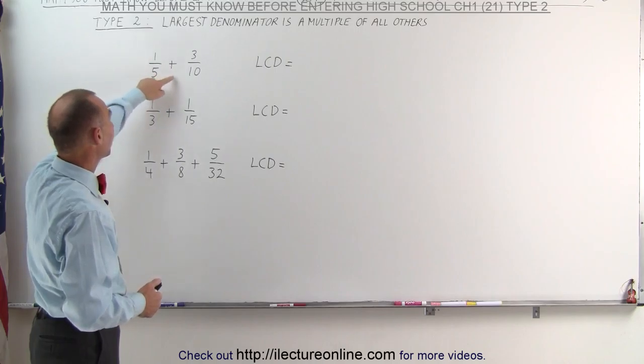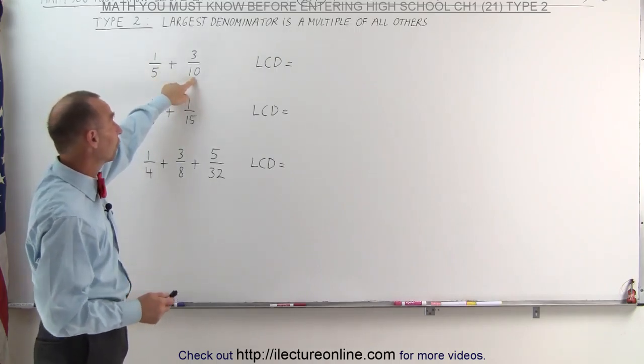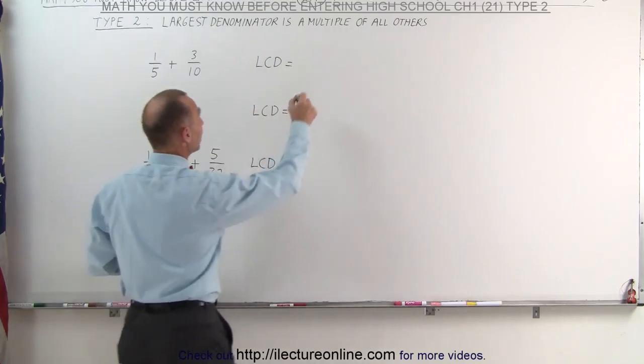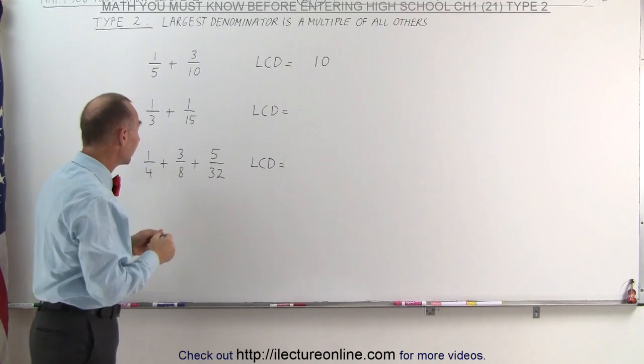Here we have an example, 1/5 + 3/10. 5 goes evenly into 10, 10 being the largest denominator. Therefore, the LCD, the lowest common denominator, is simply equal to 10.